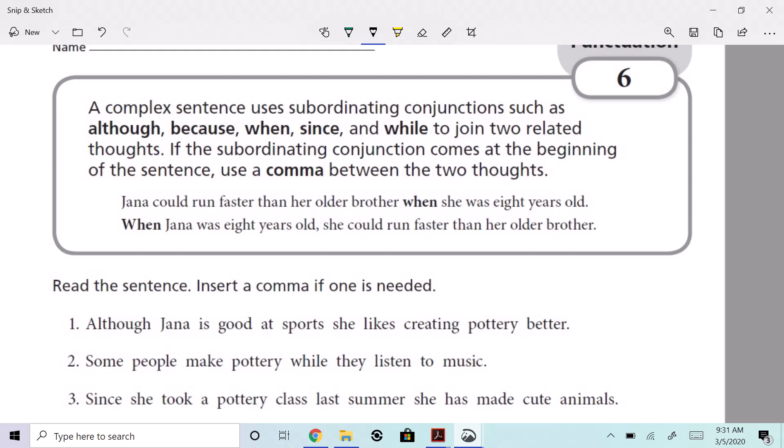When she was eight years old. When Janna was eight years old, comma, she could run faster than her older brother, right? So let's read the sentence here. We're going to insert the comma if one is needed. Although Janna is good at sports, comma, she likes creating pottery better. Some people make pottery while they listen to music. I don't think we need one there.